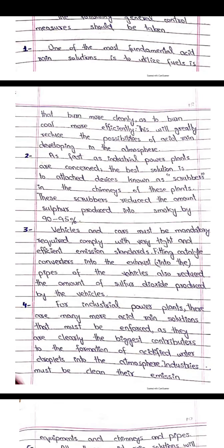We can burn coal more cleanly and efficiently. If we use fossil fuels efficiently, this will greatly reduce the possibilities of acid rain developing in the atmosphere. As far as industrial power plants are concerned, the best solution is to attach a device known as a scrubber in the chimneys of these plants. Scrubbers reduce the amount of sulfur produced in the smoke by 90 to 95%. A scrubber is a device which cleans air pollutants.